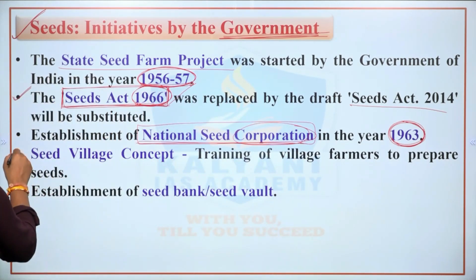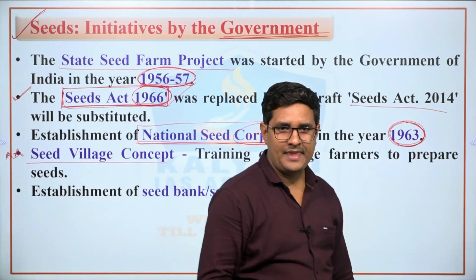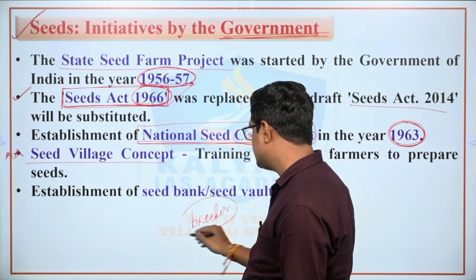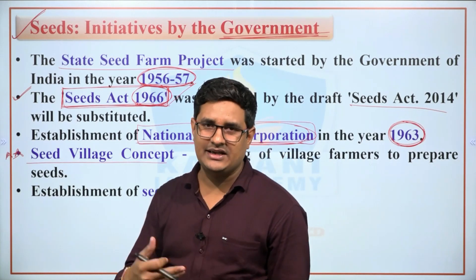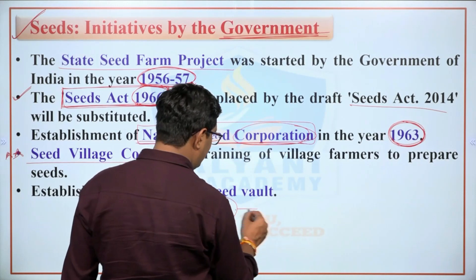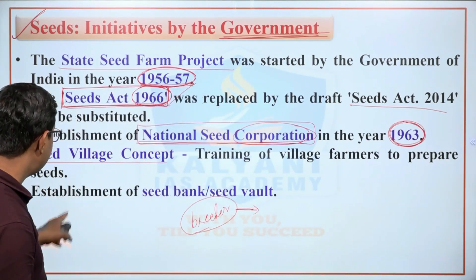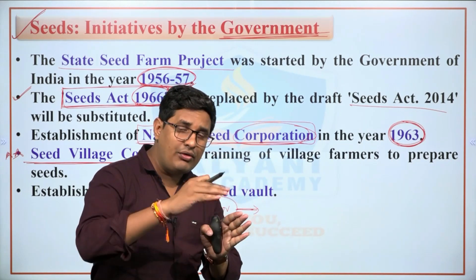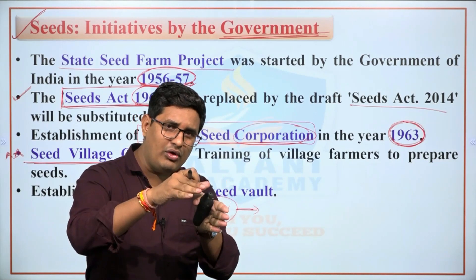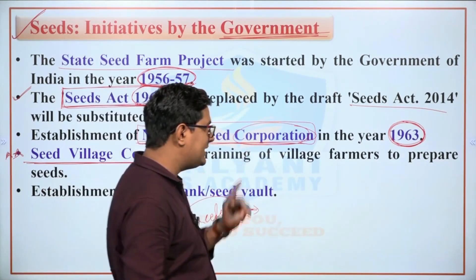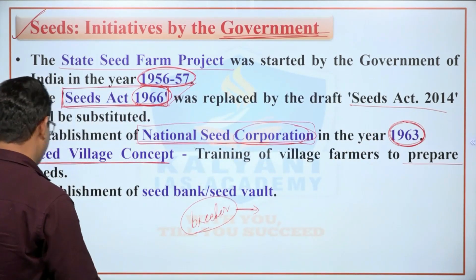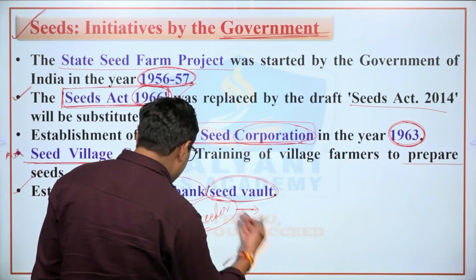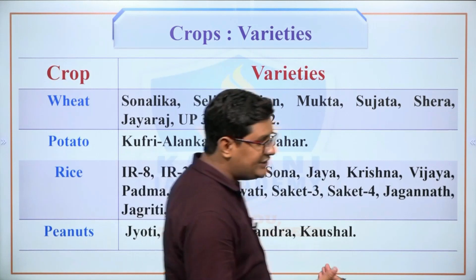The government is working on the Seed Village Concept, under which training is provided to 4 to 5 farmers of a particular village so they can prepare and produce seeds for their entire village. Additionally, the government is establishing seed banks and seed vaults so that farmers can easily obtain seeds from them.